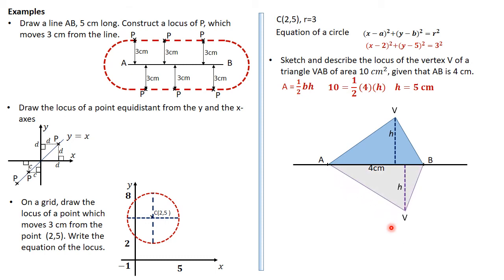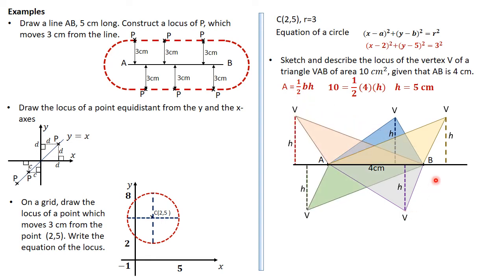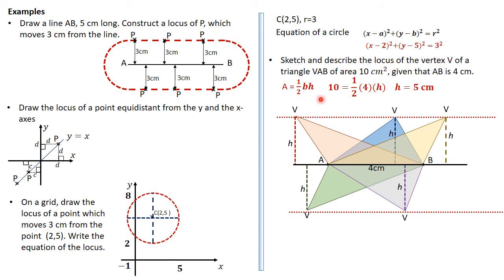V could be placed so the triangle appears in different positions — the area of triangle VAB is 10 in all cases. Therefore the locus of vertex V is a set of lines parallel to AB, five centimeters above and five centimeters below. The student should draw line AB and then draw a line parallel to it five centimeters above and below.